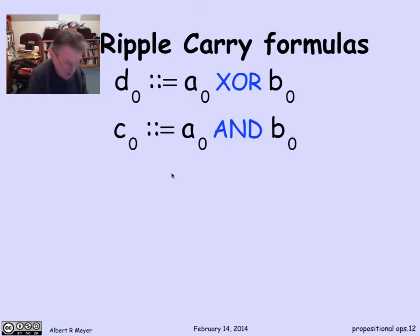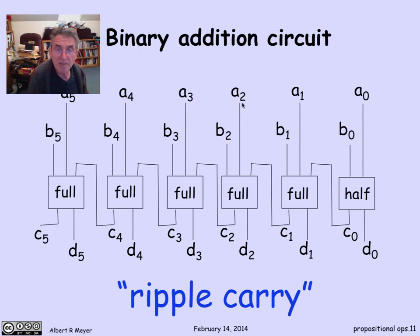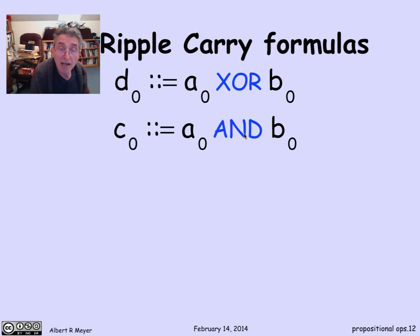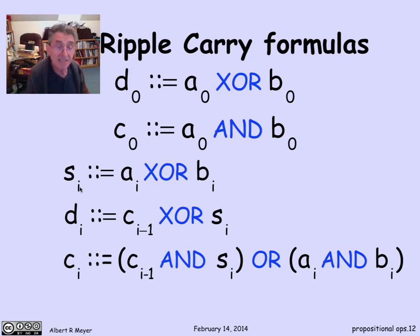Now the more general case of the full adder, what's coming in here is an a and a b with the same subscript a_i and b_i. And what's coming out is the i-th digit of the binary sum, d_i, and the carry, c_i. I can describe those just by using the formulas for the full adder. So what it means is that I'm going to introduce a new convenient variable, s_i, which I'm going to define to be a_i xor b_i. d_i is then going to be c_{i-1}, the carry from the previous place, xor'd with s_i.